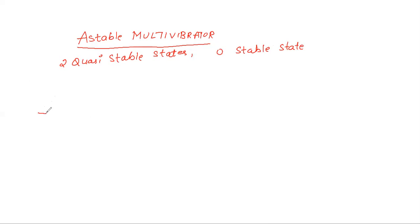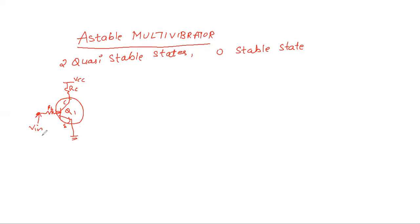If you take a transistor, this is the base terminal, this is the collector terminal, and this is the emitter terminal. This is transistor Q1. When the collector is connected to supply VCC and the emitter is grounded, and at the base I am applying the input voltage — when V_input is less than 0.7V, which is the cut-in voltage of the base-emitter junction, the transistor will be in the OFF condition, and the collector and emitter terminals will be open. This is the equivalent circuit.